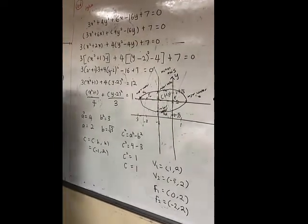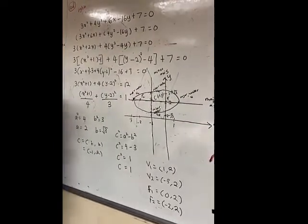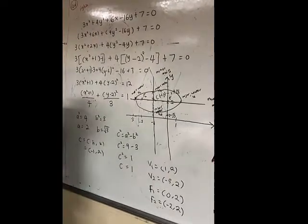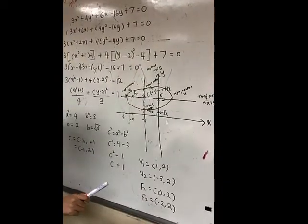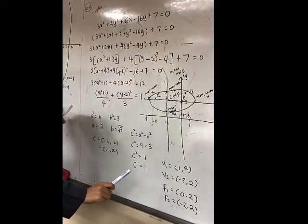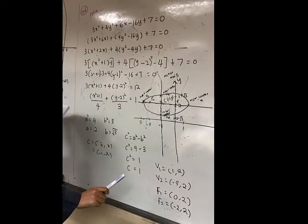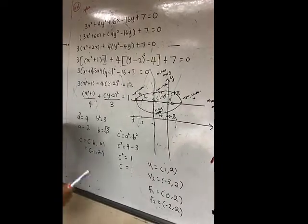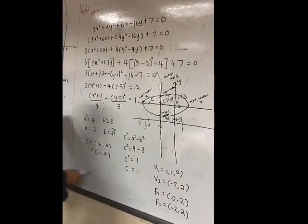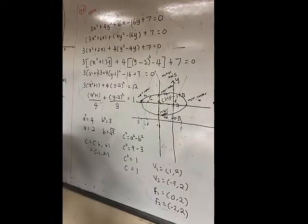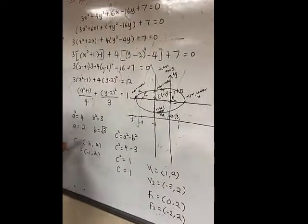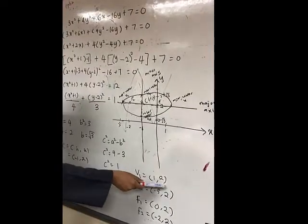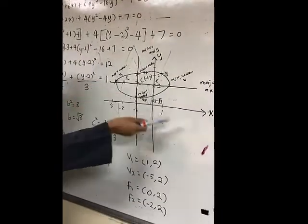For vertex 1, h plus A. H is -1 and A is 2, so I got (1, 2) point here.